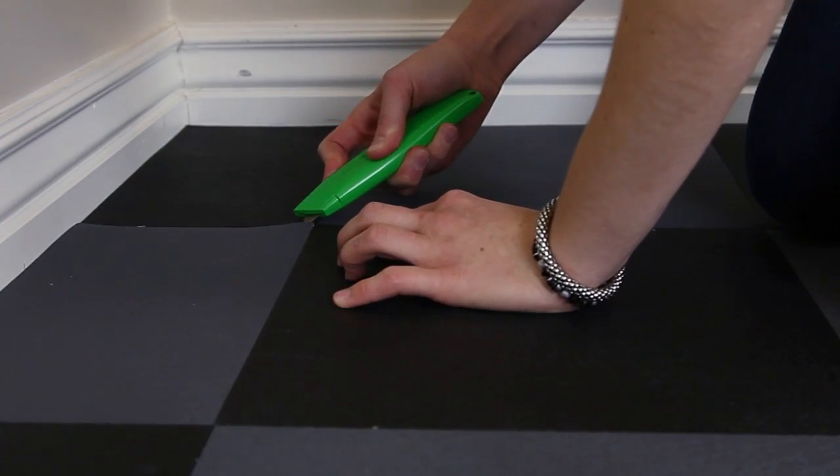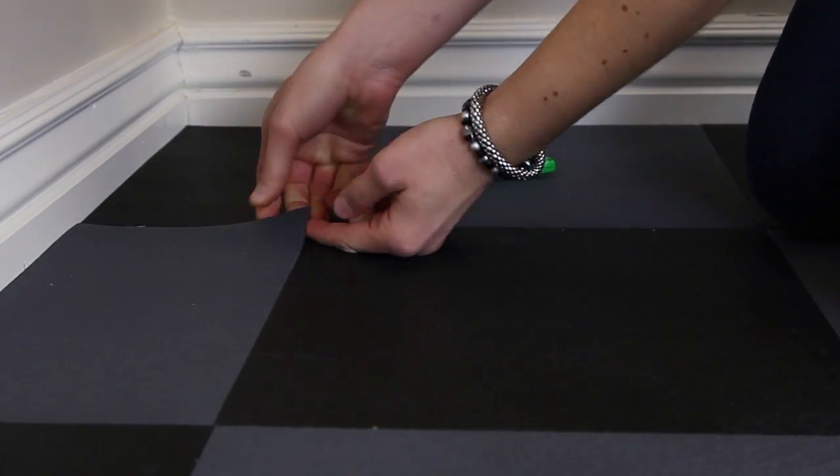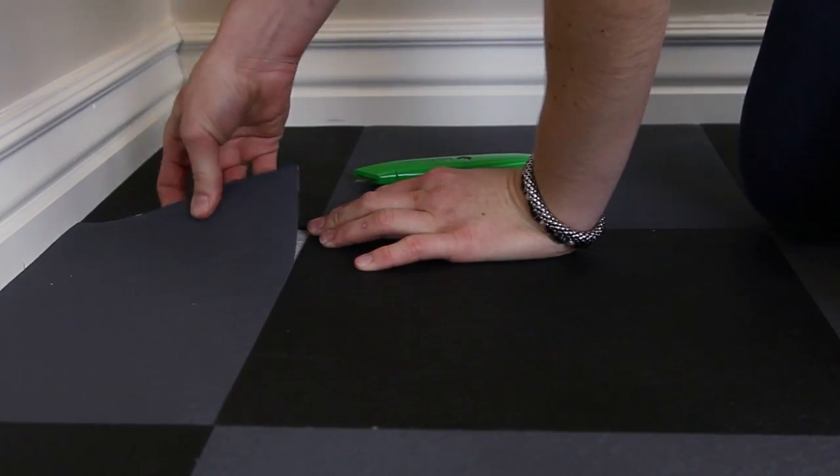If you make a mistake or want to change a tile, use a utility knife to pry up the tile and replace it with another.